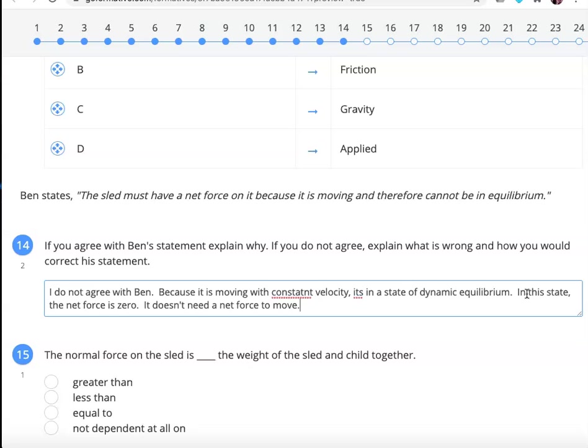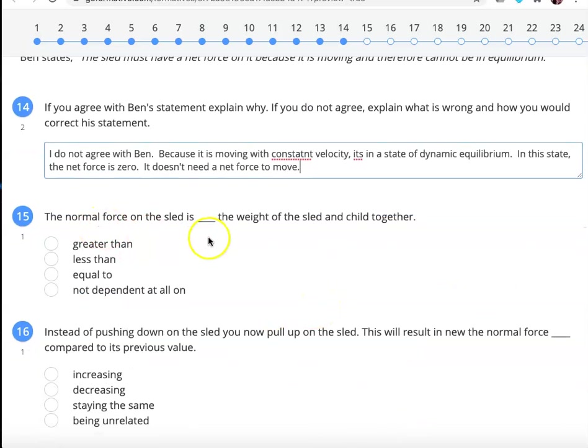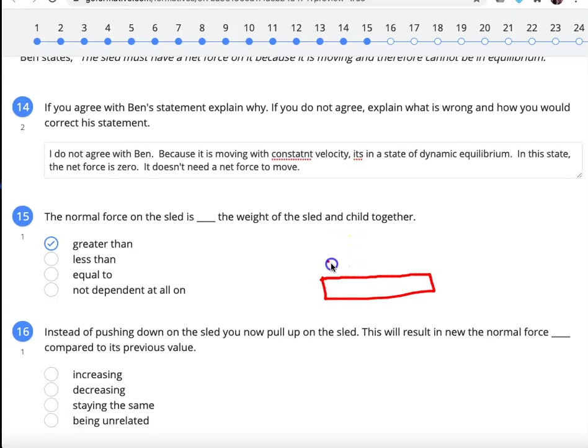Now, that's an important consideration because a lot of times people think in order to move, there must be a net force. And that's not true. If the sled was already in motion and the net force is zero, it will stay in motion. For number 15, the normal force on the sled is greater than the weight of the sled and child together. And for this, I'm going to draw something that might help. Let's say that I'm drawing and I have a scale. And on top of the scale, I put the sled and the kid. That's a kid. I don't know where their lower half is. It just doesn't fit on the sled.